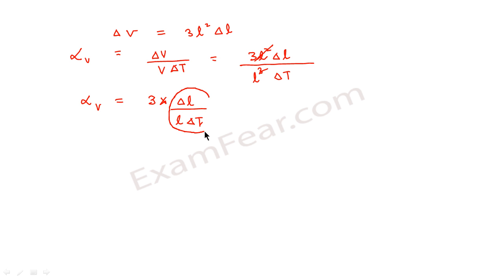So what is this? Delta l by l into delta T - this is nothing but alpha l, that is, the coefficient of linear expansion. So we find that the coefficient of volume expansion is 3 times the coefficient of linear expansion.